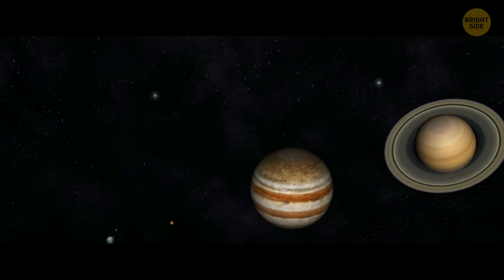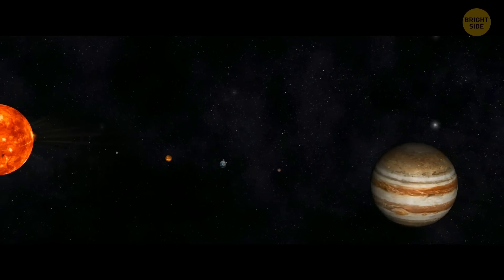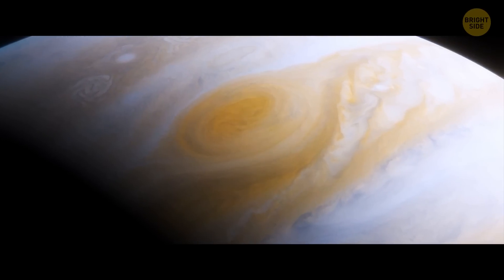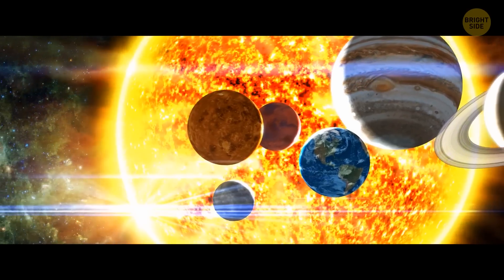Once, a long, long time ago, Jupiter took most of the mass that was left after the formation of our Sun. That's how it ended up with more than twice the combined material of all other bodies in the solar system.